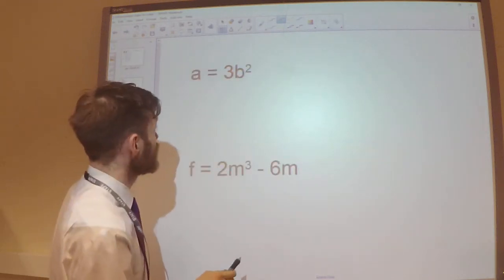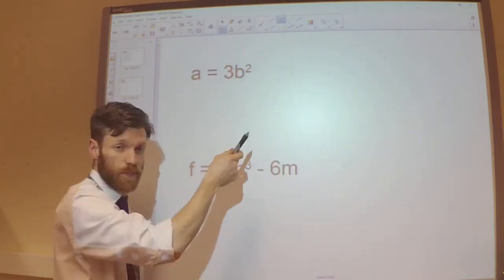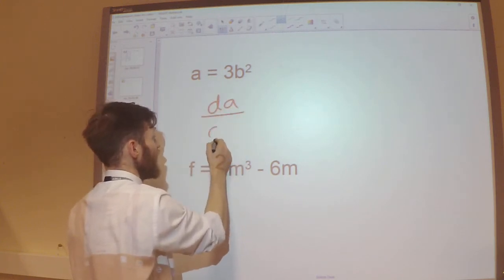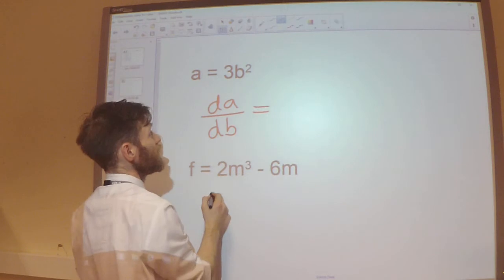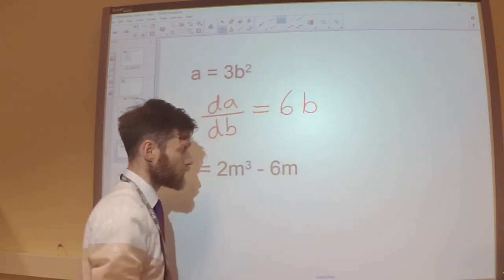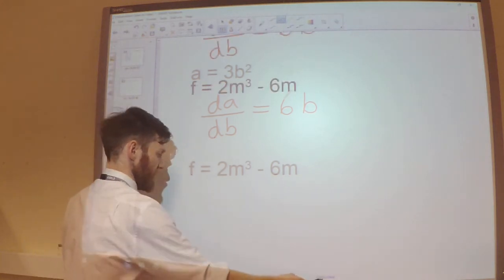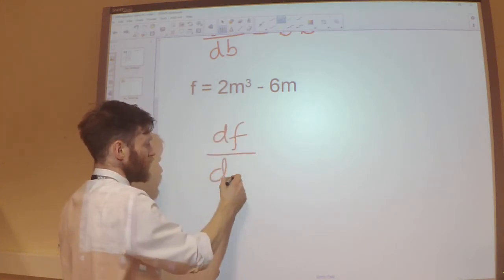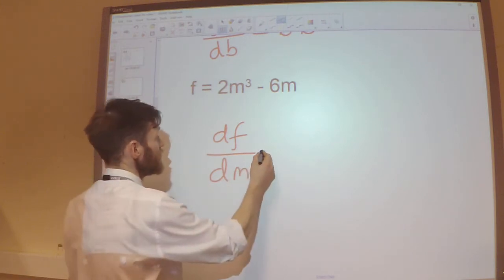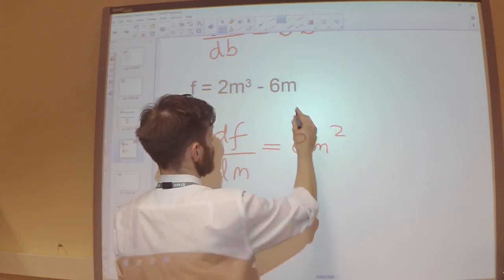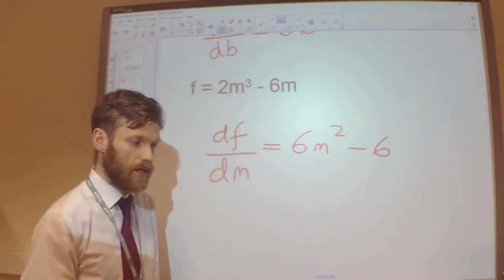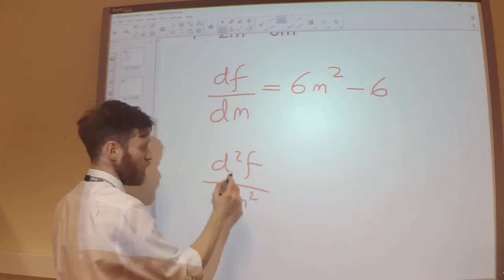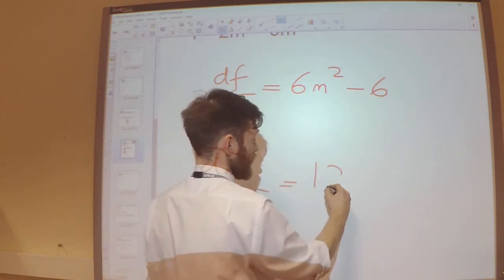If we have different variables — so if variable a is related to b by this equation, then differentiating gives the rate of change of a with respect to b as 6b. If f and m are related by this equation, the rate of change of f with respect to m is 6m squared minus 6. Differentiating again gives the rate of change of that rate of change with respect to m as 12m.